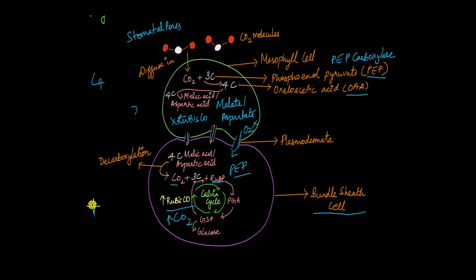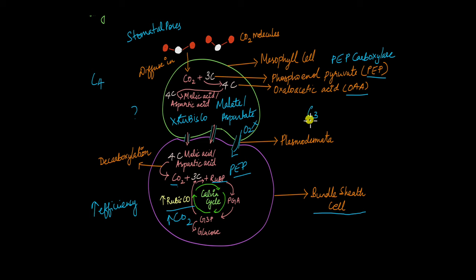This increases the efficiency of the Calvin cycle in the bundle sheath cells, increasing production of glucose and other sugars. C4 plants ensure only carboxylation takes place. In contrast, C3 plants have only one type of cell — the mesophyll cells — where both carboxylation and the entire Calvin cycle take place, without this segregation mechanism.